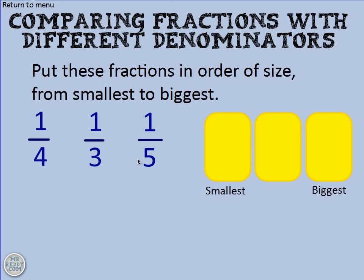Okay, next one. Put these fractions in order of size from smallest to biggest. Now this is where all the numerators are the same but the denominators are different. You might be thinking from the previous example, well I'll just choose the smaller number and that'll be the smallest. We really need to understand what's going on — I don't want to just state a rule.